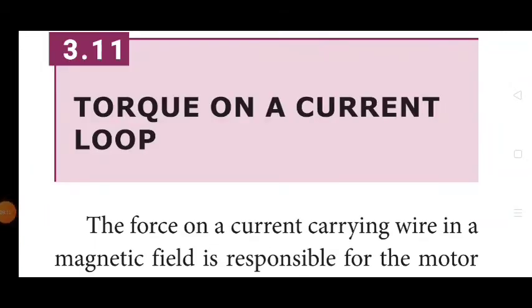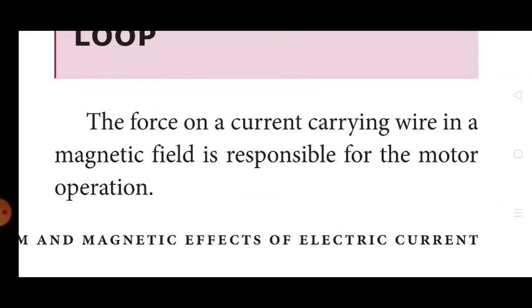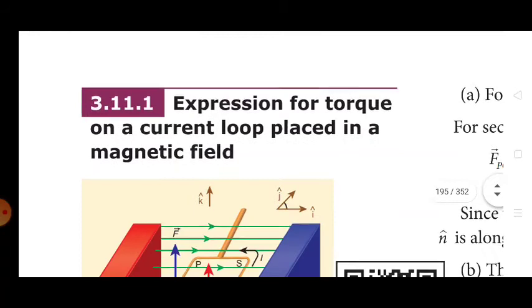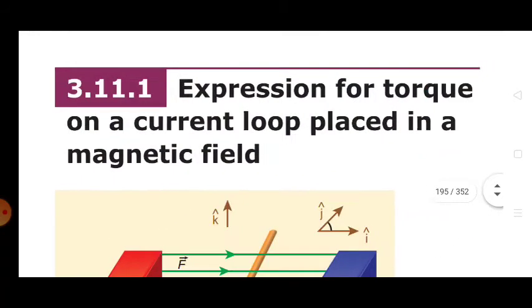The next topic is torque on a current loop. Force on a current carrying wire in a magnetic field is responsible for the motor operation. The expression for the torque on a current loop placed in a magnetic field involves a current loop in a magnetic field.